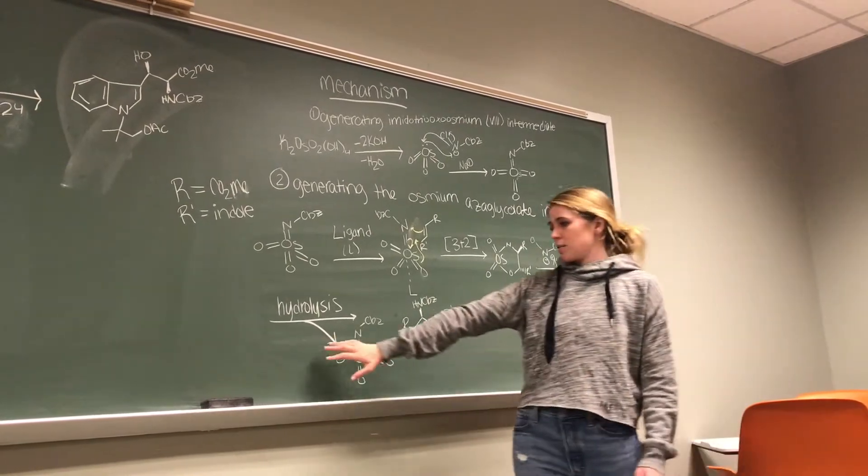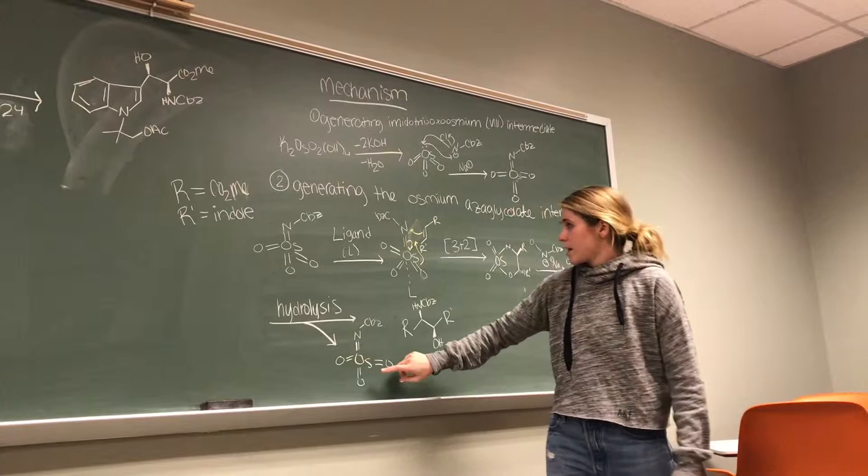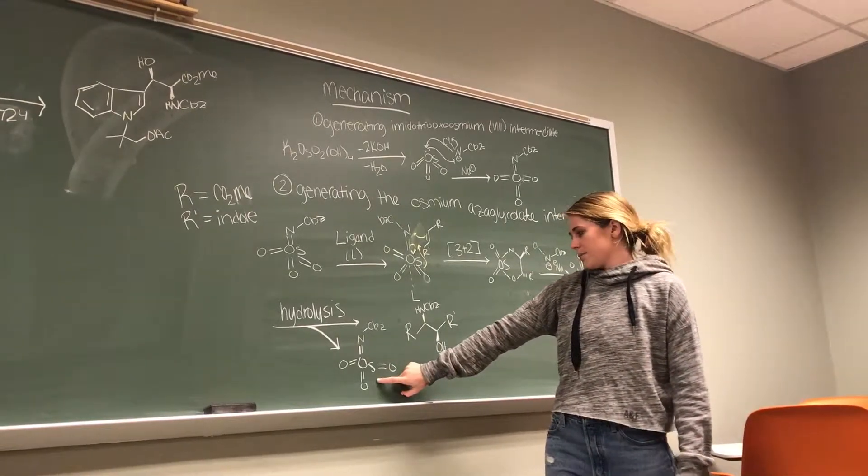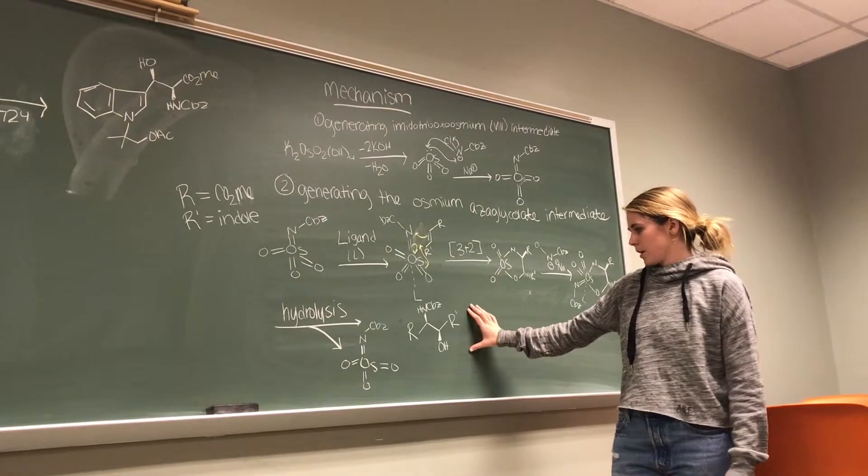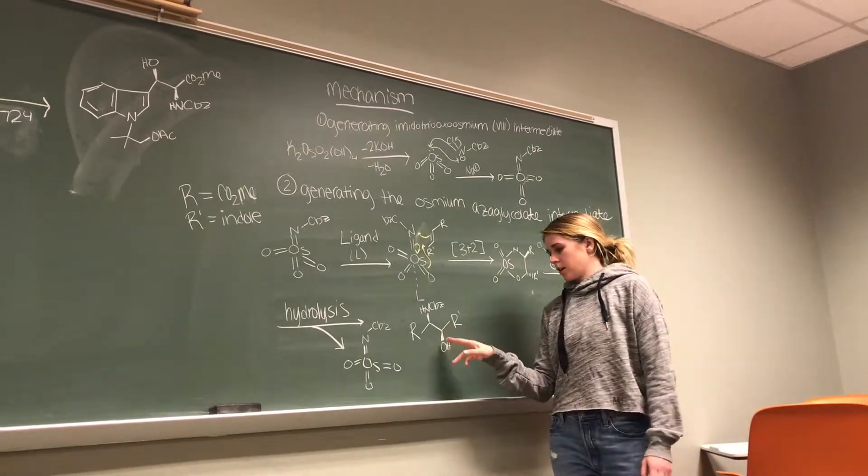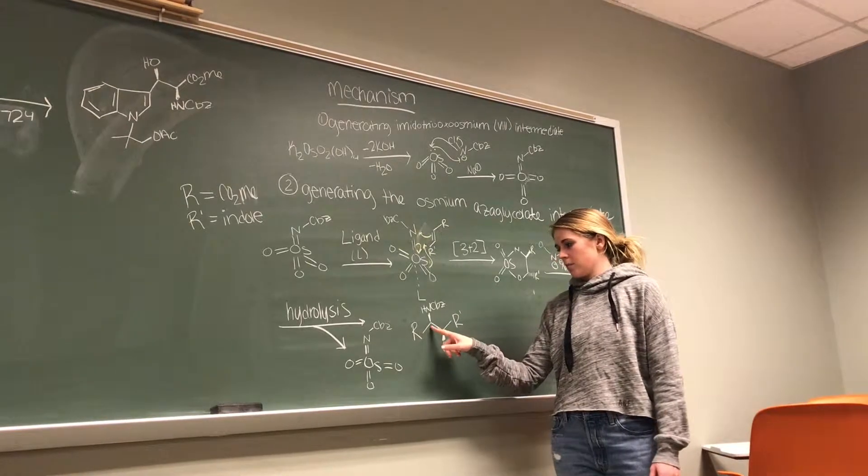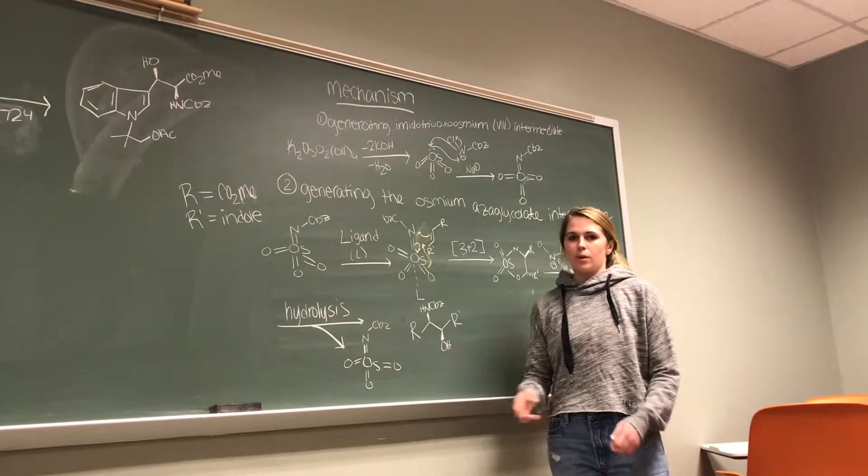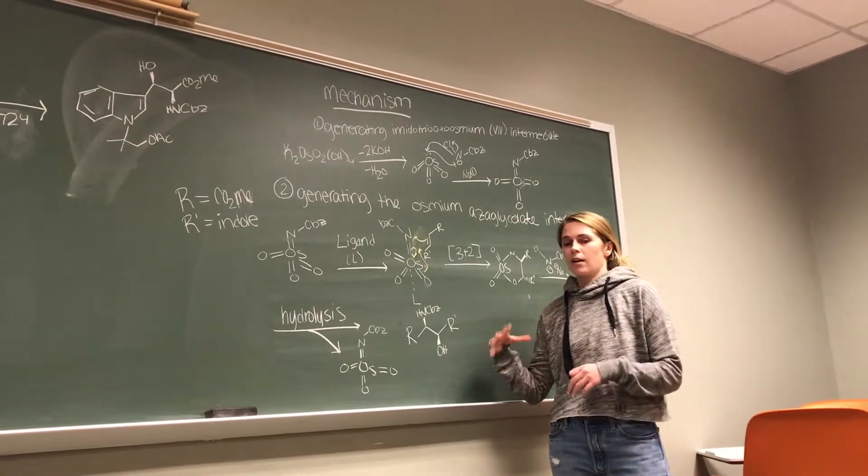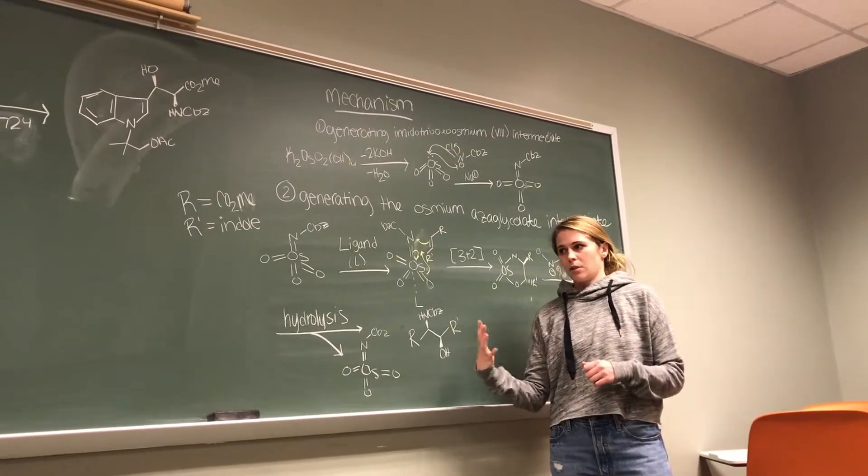So then the next step is hydrolysis. And that will actually release the key imidotrioxide osmium intermediate. And then also our compound, our product. So we can see that the stereochemistry between the alcohol group and the amine group is syn. And just like we had spoke about before, it added to the beta face because their chiral ligand blocked their alpha, the alpha enantiotopic face.